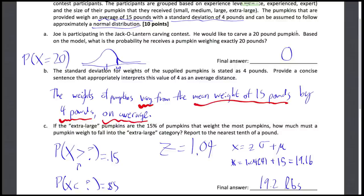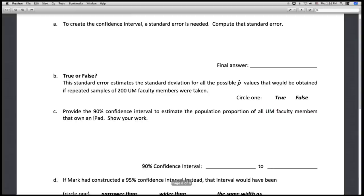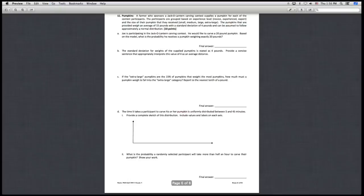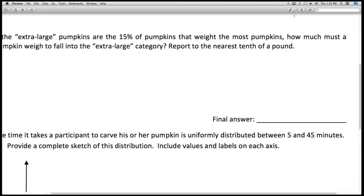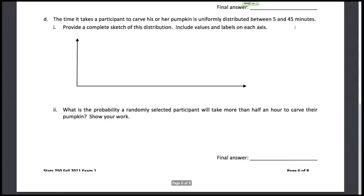All right. So that's our questions here on the normal distribution. Now we're going to look now at the uniform distribution in part D. Let's go ahead and clear the board. So the time it takes the participant to carve his or her pumpkin is uniformly distributed between 5 and 45 minutes. So we need to provide a complete sketch of this distribution. So the uniform distribution is just your box distribution.